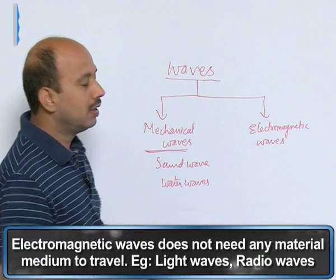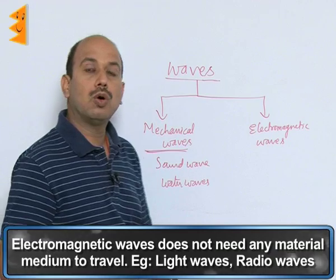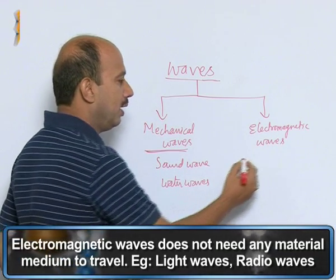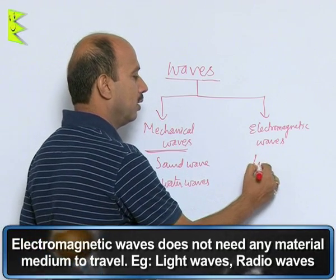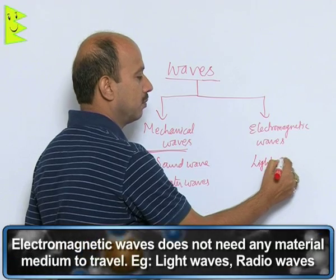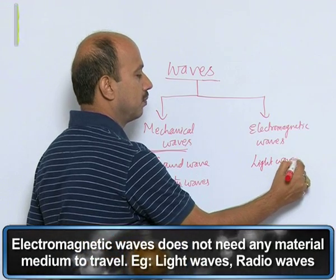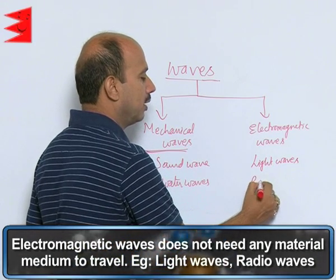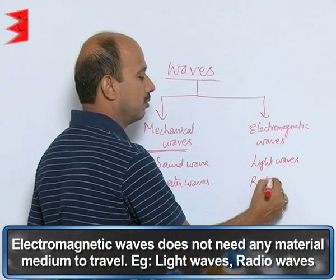Electromagnetic waves do not require a material medium to travel. Examples include light waves and radio waves.